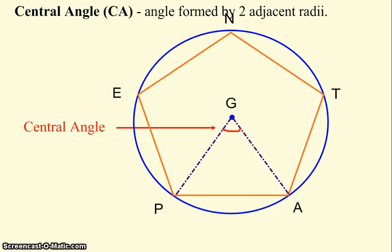Our next vocab word is called the central angle. You've already been exposed to this a little bit. You're going to start using it a lot and become very comfortable with it. The definition of a central angle says it's an angle formed by two adjacent radii. Remember, adjacent means next to. So if you look at this picture, I've got a radius GA, because it goes from the center out to a vertex, and I've got the radius GP. So you have a central angle right here. It would be called angle PGA.